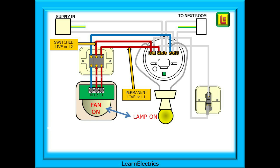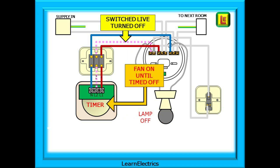Correctly connected, when the lamp is on the fan will be on. If we turn the lamp off, the voltage on the switch live will drop to zero — shown here by changing the L2 cable from solid brown to a dotted line, indicating no voltage. The fan will now continue to operate until the timer reaches its preset time and it too turns off.